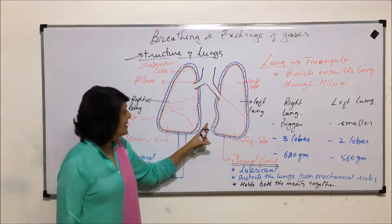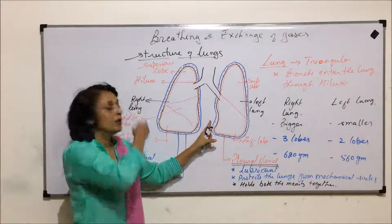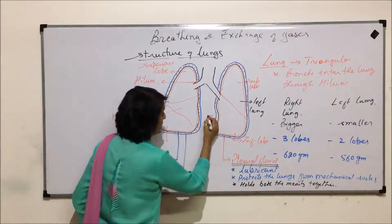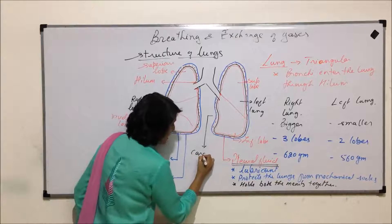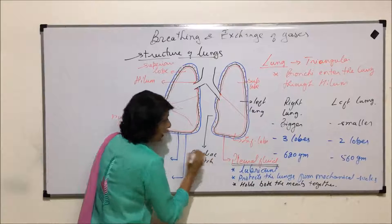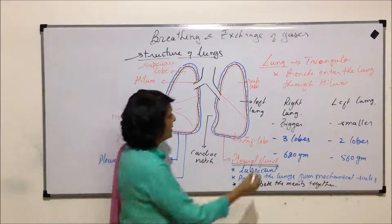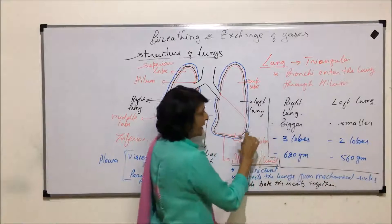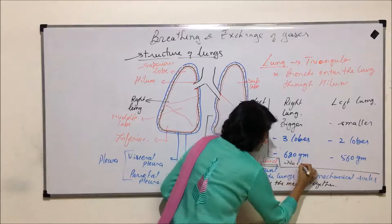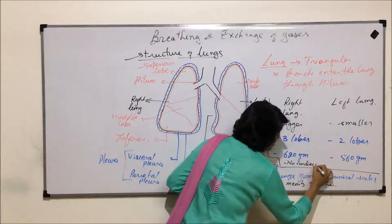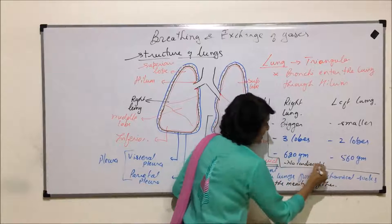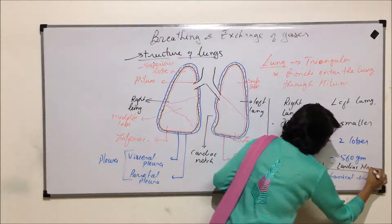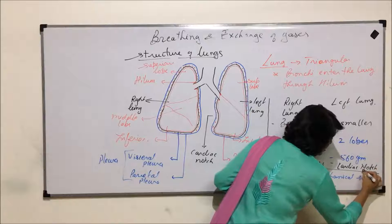Now let us see what is special about the left lung. In the left lung, there is a depression known as the cardiac notch. This is one more difference between the left and the right lung — in the right lung there is no cardiac notch, whereas in the left one, the cardiac notch is present.